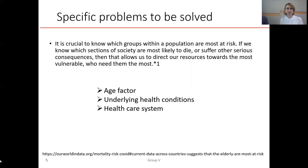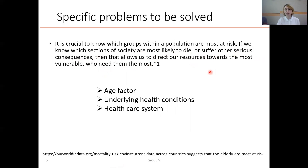It is crucial to know which groups within the population are most at risk. If we know which sections of society are most likely to die or suffer serious consequences, that allows us to direct our resources towards the vulnerable who need them most. Among the key problems we highlight are the age factor, underlying health conditions, and the healthcare system.